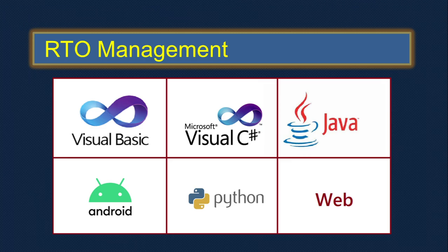We need to understand how these works take place in RTO, how to write the program, and how to make an application to help the RTO department. Understanding the whole concept of RTO is domain knowledge, and the programming language is the programming skill. Combining both, you can make this particular application.